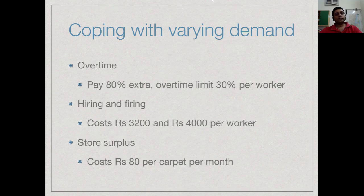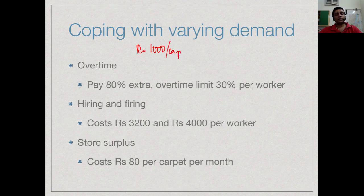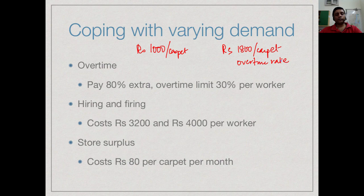One possibility is paying overtime when we have extra demand. Workers work longer hours and make more carpets, but there are two costs: the overtime wage rate is higher — 80 percent extra — so a carpet made in overtime costs 1,800 rupees instead of 1,000 rupees. Also, a worker cannot spend more than 30 percent of their time in overtime, so if they normally make 20 per month, at most they can make 26 per month including overtime.